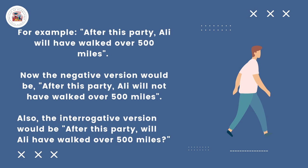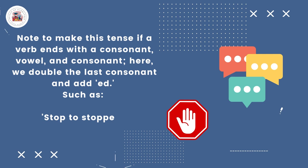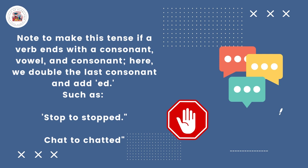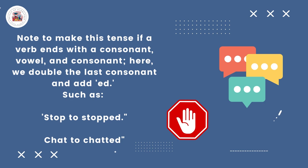Note: to form the past participle, if a verb ends with a consonant-vowel-consonant pattern, we double the last consonant and add -ed. Such as: stop → stopped, chat → chatted.